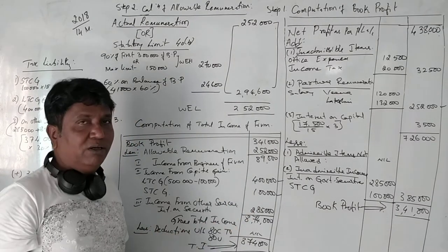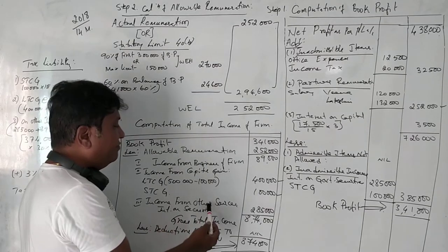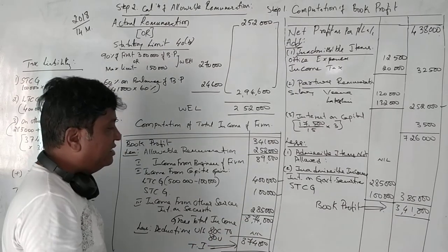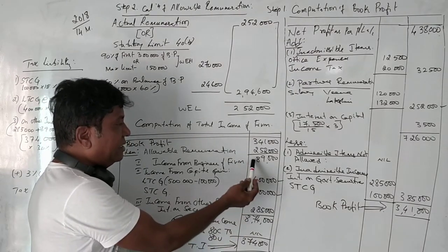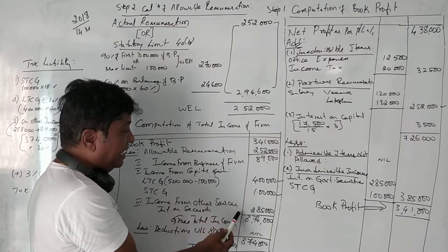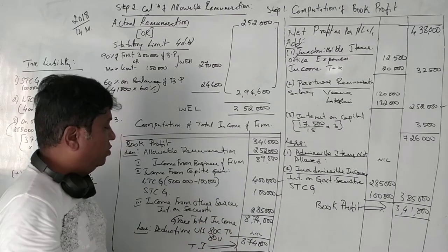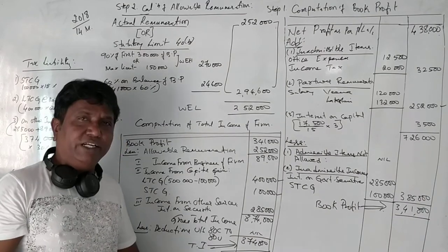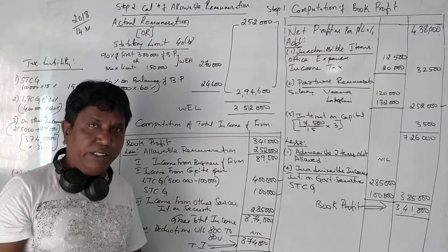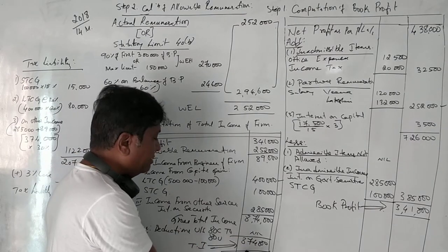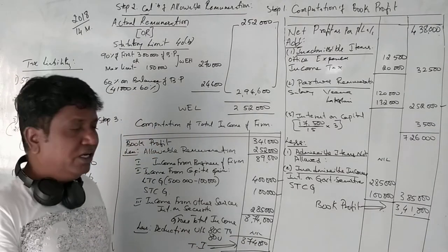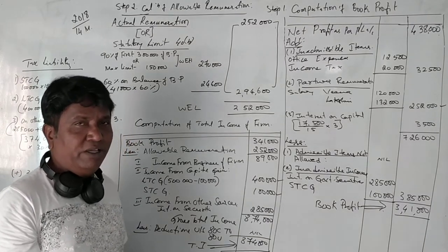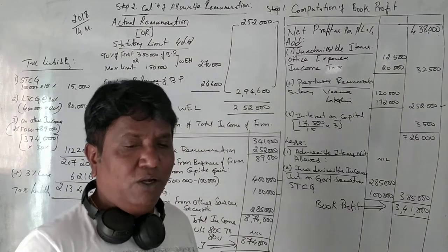Income from other sources — interest on government securities — is Rs. 2,85,000. Totaling income from business, capital gains, and other sources gives a gross total income of Rs. 8,74,000. Since there is no deduction under sections 80C to 80U, this gross total income itself becomes the total taxable income: Rs. 8,74,000.